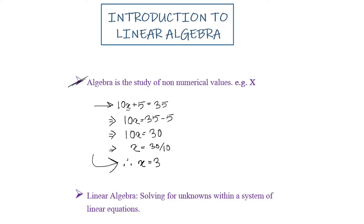Now moving into the definition for Linear Algebra, it will make more sense: Linear Algebra is a method of solving for unknowns within a system of linear equations. Just as we had a linear equation where the value for x was unknown, and after applying some calculation we were able to find out the value for x — this is actually where Linear Algebra helps us.